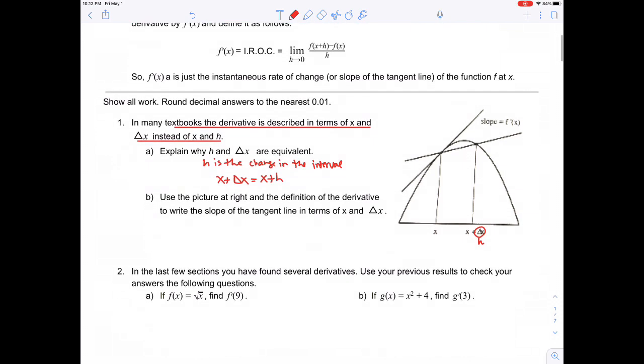Use this picture and the definition of a derivative to write the slope of the tangent line in terms of x and delta x. You start with a secant line, then you change delta x or h, making it smaller and smaller so that change becomes nothing and you get the actual slope at point x. You find the limit as h approaches 0, which equals f prime of x or the instantaneous rate of change.